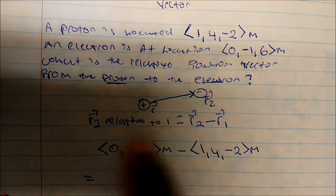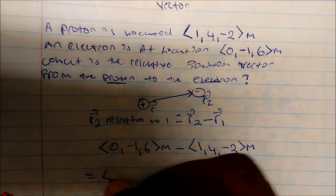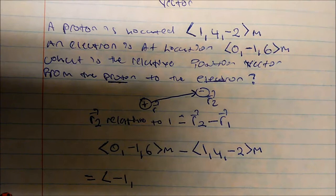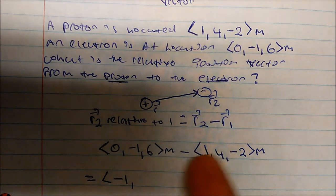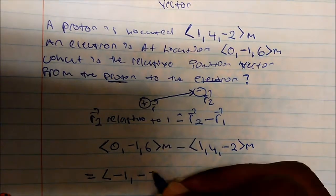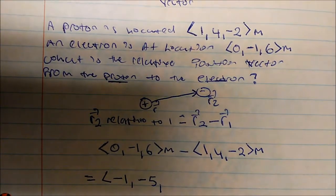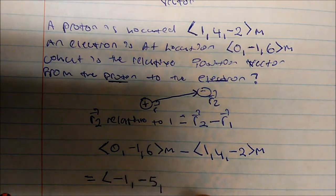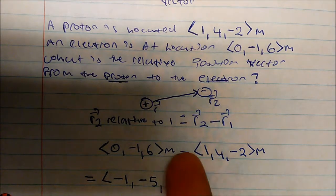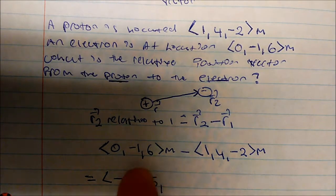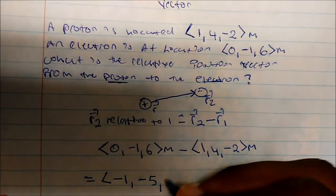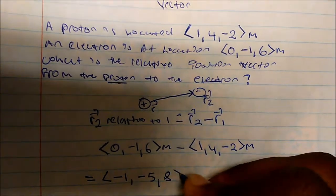So if I'm looking at this, 0 minus 1 gives us negative 1 in the x direction. Negative 1 minus 4, that's negative 5 in the y direction. And then 6 minus negative 2. Well, a minus times a minus will give me a positive number. So this becomes 6 plus 2, which will be 8 in the z direction.